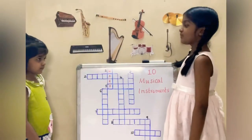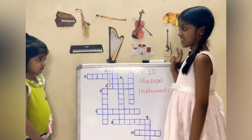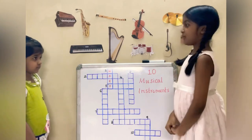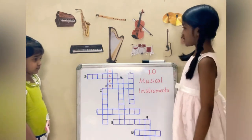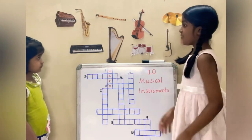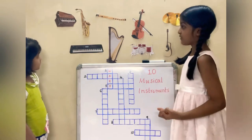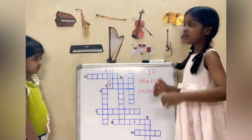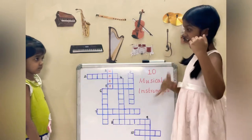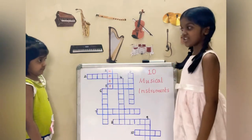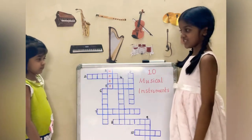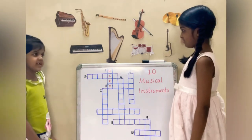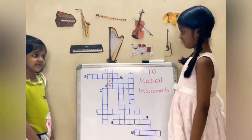Now I am going to give the clue for the second musical instrument. It is also a string musical instrument. We can hold this instrument flat against our body and play by plucking the strings with our hand. Can you guess the name of the instrument? Yes, the name of the instrument is guitar.